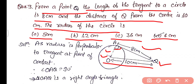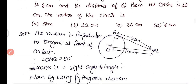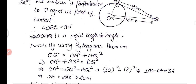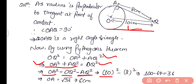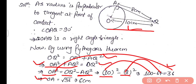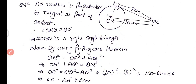Since the radius is perpendicular to the tangent at the point of contact, angle OAQ is 90 degrees, making triangle OAQ a right-angled triangle. By the Pythagorean theorem: OA² + AQ² = OQ². So OA² = OQ² − AQ² = 10² − 8² = 100 − 64 = 36. Therefore OA = √36 = 6 centimeters. The radius is 6 cm, so option D is correct.